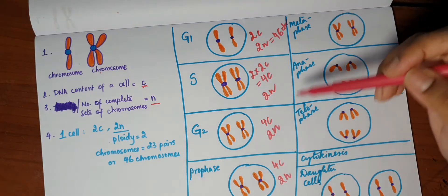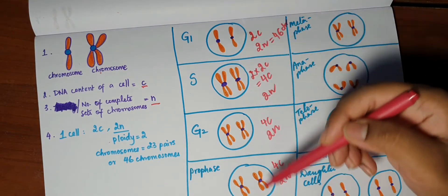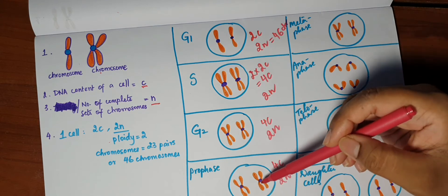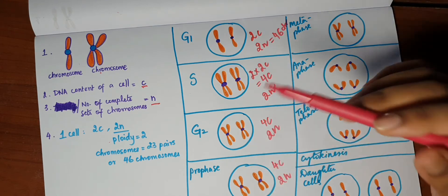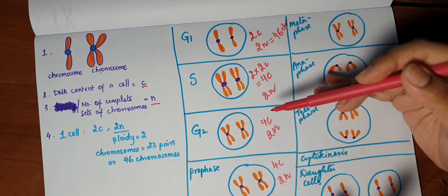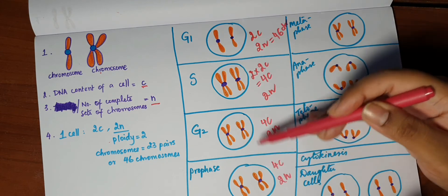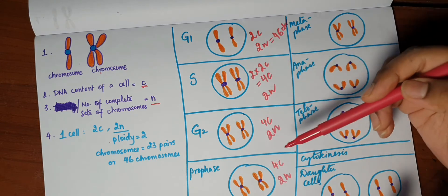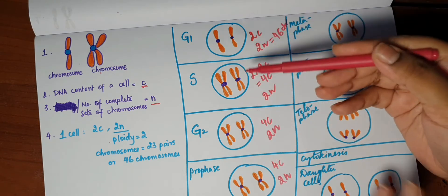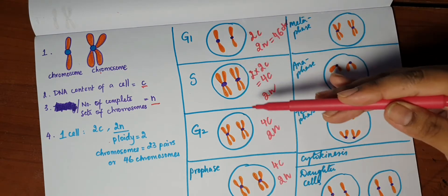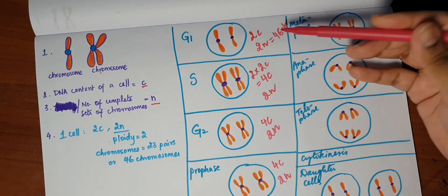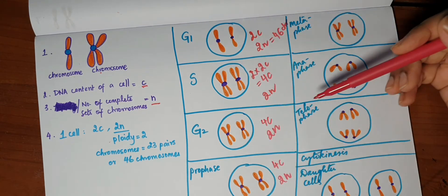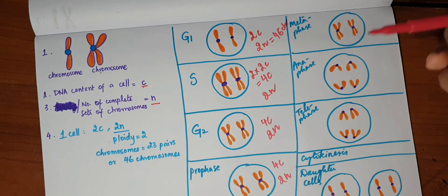Now remember, even though I'm drawing the chromosomes this way, the visible chromosomal condensation is not appreciable until prophase. In these three phases, you cannot see the chromosomes as clearly as I've drawn here. So don't assume that this is how it appears in each of the phases. This is just for representation so that you can understand how many chromosomes and how much DNA is in each phase of mitosis.